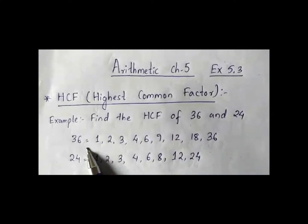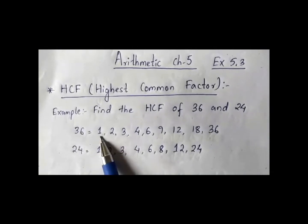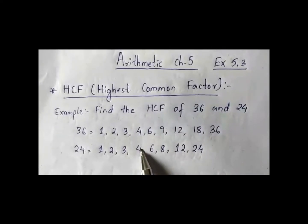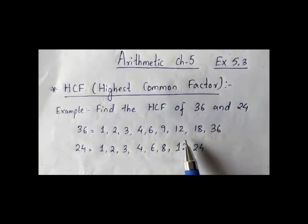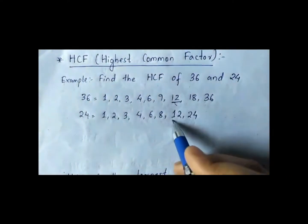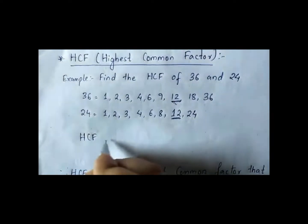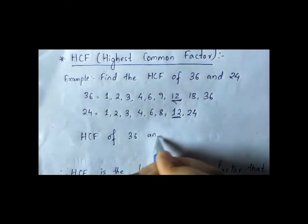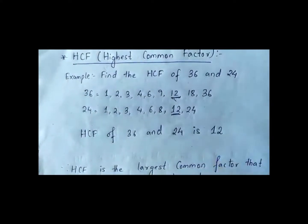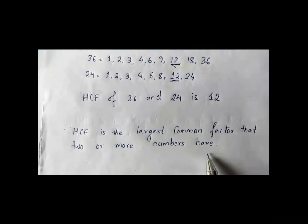We will write all the possible factors of 36 and 24. Now you see what are the common factors here. 1 is common, 2 is common, 3 is common, 4 is common, 6 is common, and 12 is common. The highest factor which is common is 12. So the HCF of 36 and 24 is 12. HCF is the largest common factor that two or more numbers have.